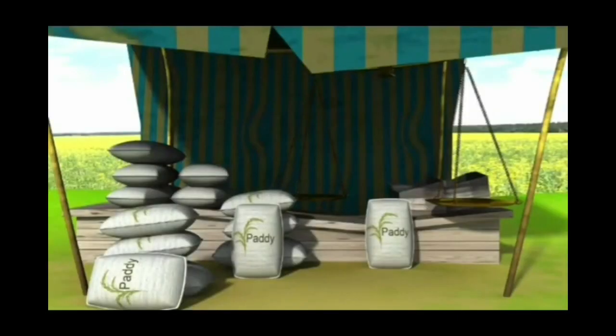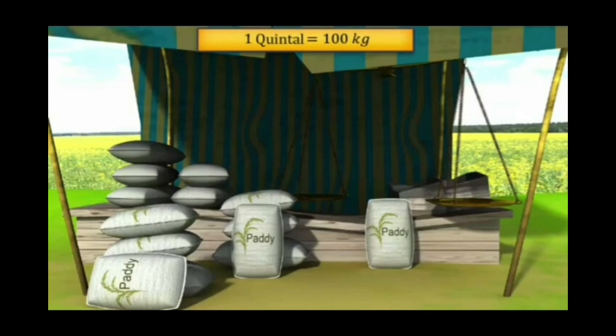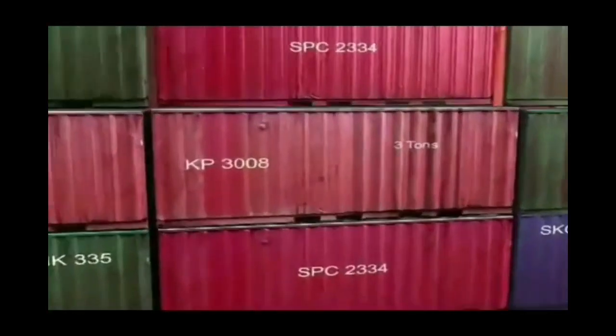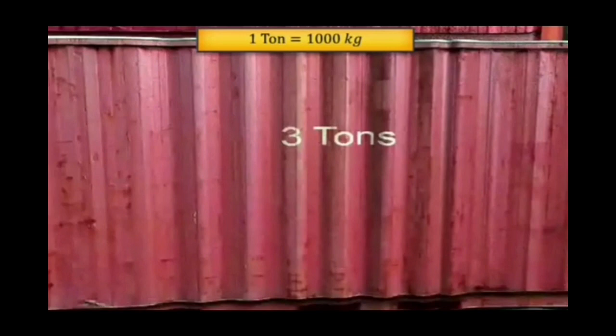Even if the SI unit is kilogram, we use some other units like quintile, tonne, etc. One quintile is equal to 100 kilogram. The mass of cement bag, paddy bag, etc., we express in the unit of quintile. Another common unit of mass is tonne. And one tonne is equal to 1000 kilogram. So quintile and tonne, they are bigger units of mass.